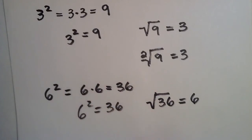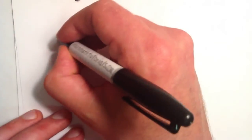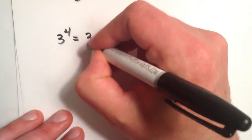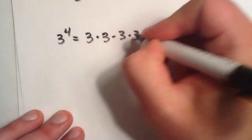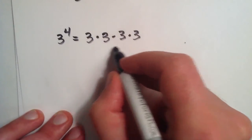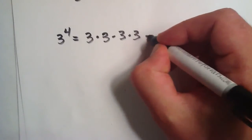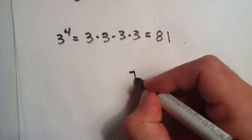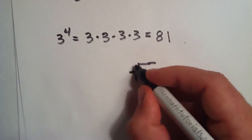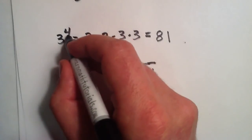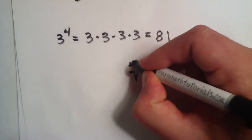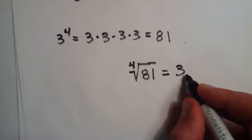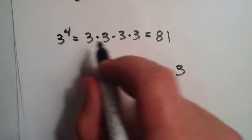Now, what if our power isn't 2? Let's do 3 to the fourth power. So this is the base 3 multiplied by itself 4 times: 3 times 3 times 3 times 3. Now, 3 times 3 is 9, 9 times 3 is 27, and 27 times 3 is 81. Starting at 81 and working our way back to 3, we take the root of 81. But this time we're not dealing with the square root, because the exponent was a 4 that brought us to 81. So it has to be the fourth root in order to bring us back to 3. The fourth root of 81 gives us 3 because 3 to the fourth power gives us 81.